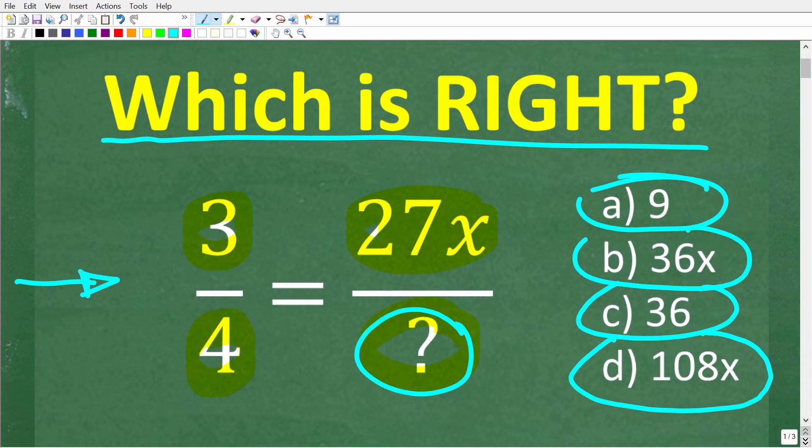So once again, we have 3 divided by 4, or 3 fourths, equal to 27x over something. Which is the correct answer? Let's take a look at the complete solution right now.